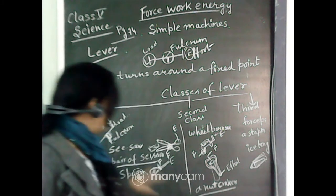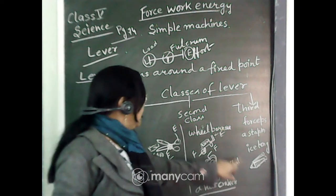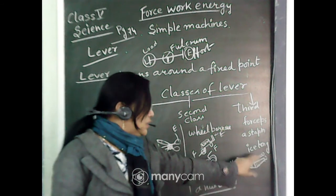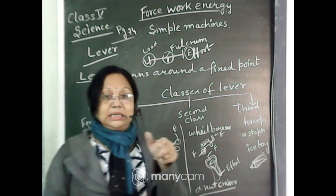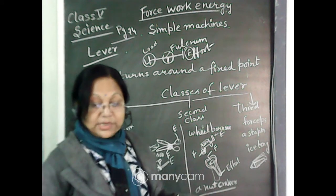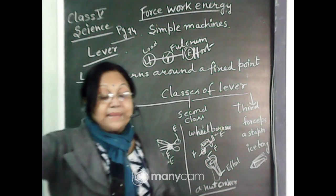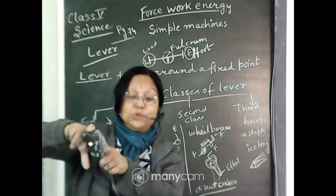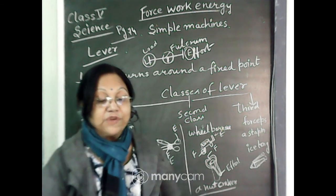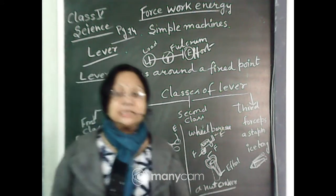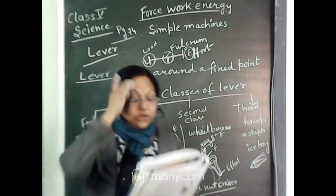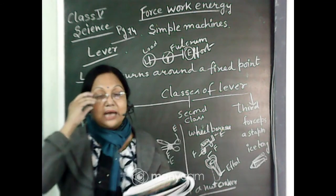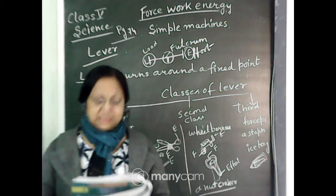In the third class lever: the fixed part is the fulcrum, we apply force in the middle which is the effort, and the work is done at the far end which is the load. So in summary: in the first class lever fulcrum is in the middle, in the second class lever fulcrum is at the front, and in the third class lever effort is in the middle. Examples of third class levers are forceps, staple machine, and ice tongs.